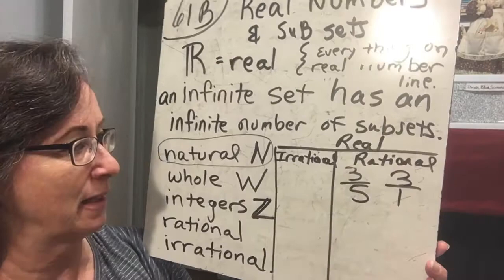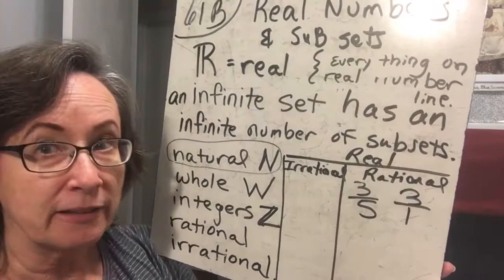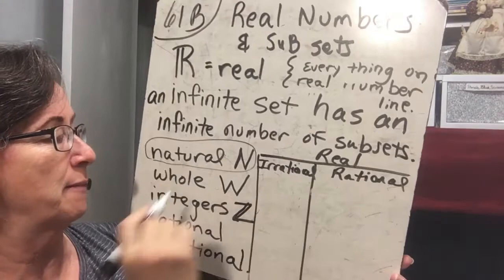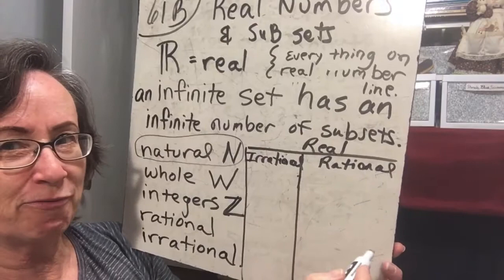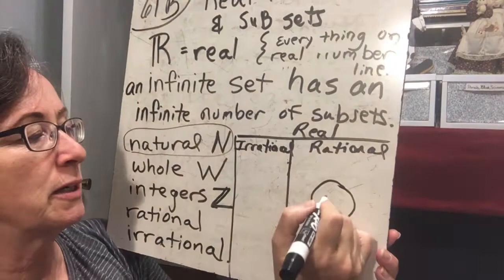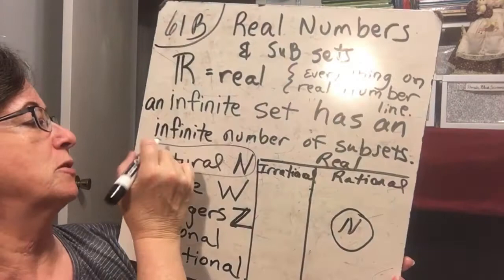Natural numbers are any numbers that we just naturally start counting with: 1, 2, 3, 4, 5, and so on. We'll put natural numbers as the very first ones we normally start counting with.